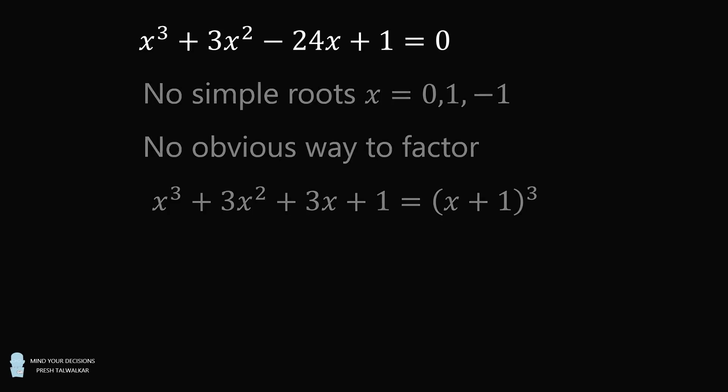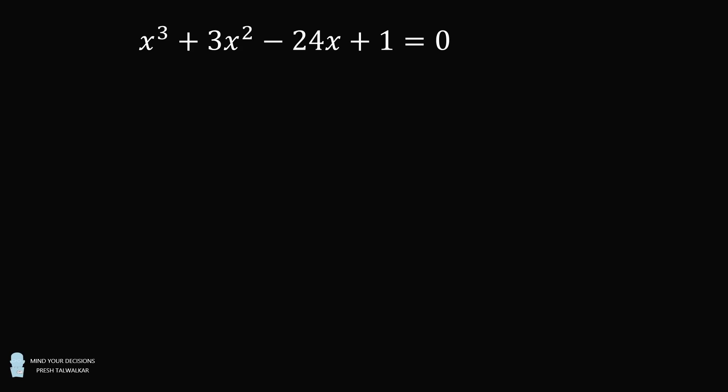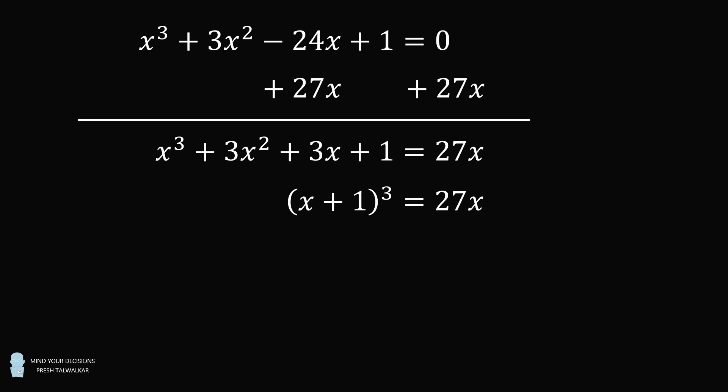So let's transform the original equation by adding 27x to both sides. The left-hand side then becomes x cubed plus 3x squared plus 3x plus 1, and the right-hand side is 27x. The left-hand side factors. We can then take the cube root of both sides, and the cube root of 27 is equal to 3. So we have x plus 1 equals 3 times the cube root of x.